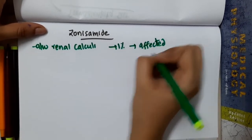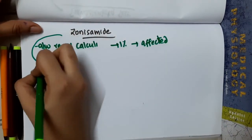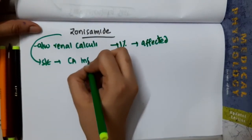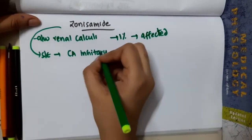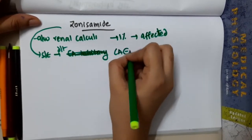With zonisamide, the side effects of carbonic anhydrase inhibition are seen. Side effects are mainly due to carbonic anhydrase inhibition.